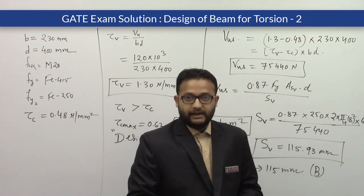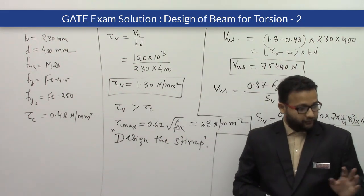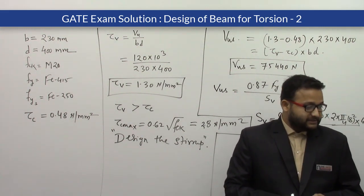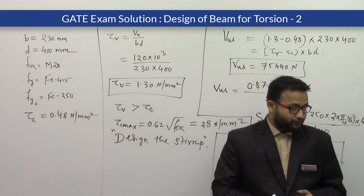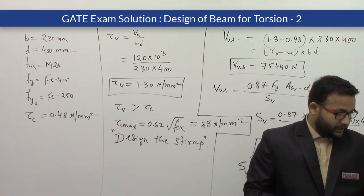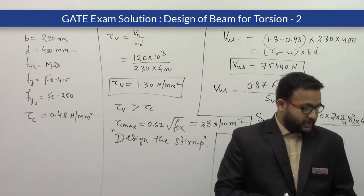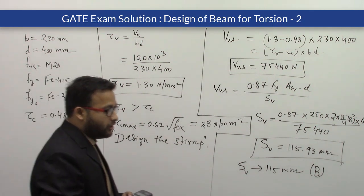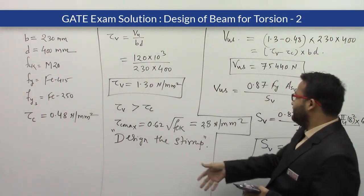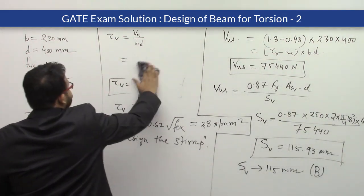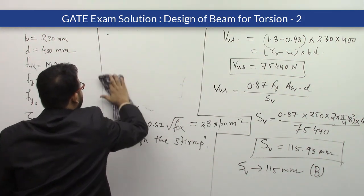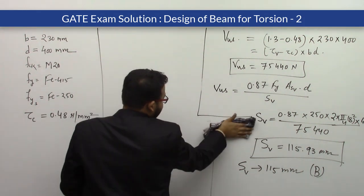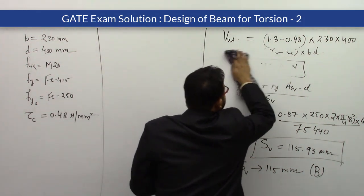Now for the second problem using the same data. In addition, the beam is subjected to a torsional moment whose factored value is 10.90 kN·m. In the first problem we only considered shear force. Now we must consider the effect of torsion combined with shear force, and calculate the equivalent shear force.